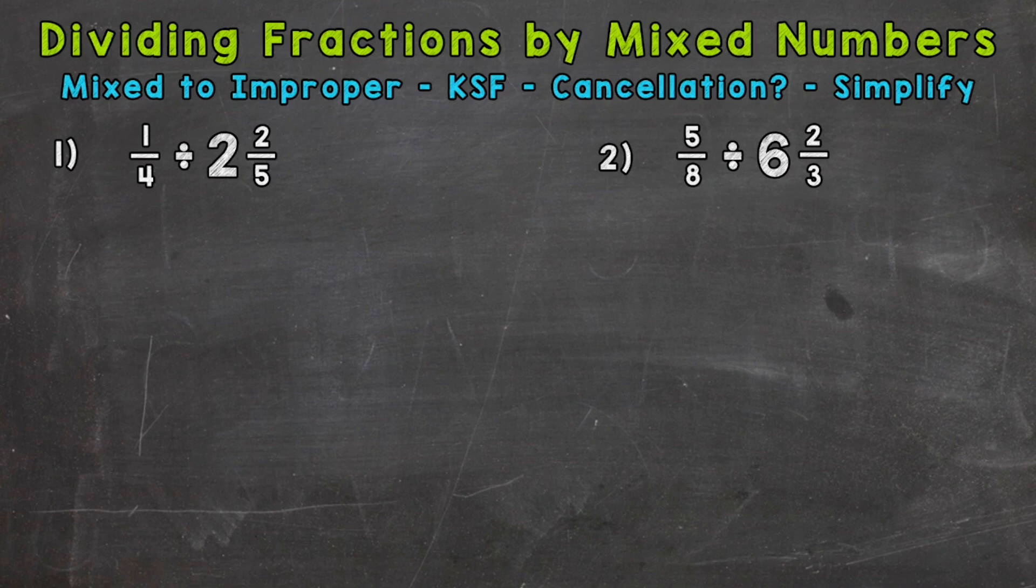We have two examples that we're going to go through together. Let's jump into number one, where we have one-fourth divided by two and two-fifths. The steps are at the top of the screen. The first thing we need to do is rewrite this problem with any mixed numbers changed to improper fractions.